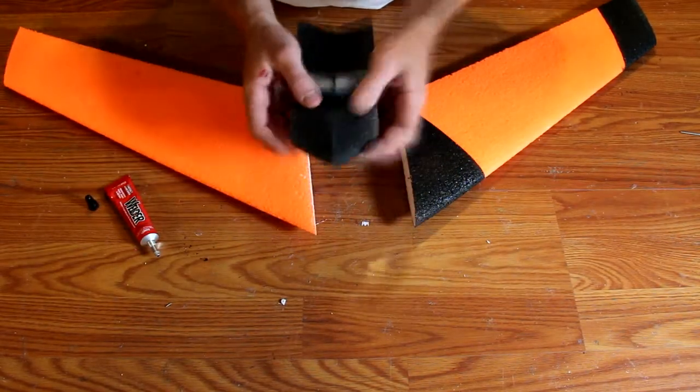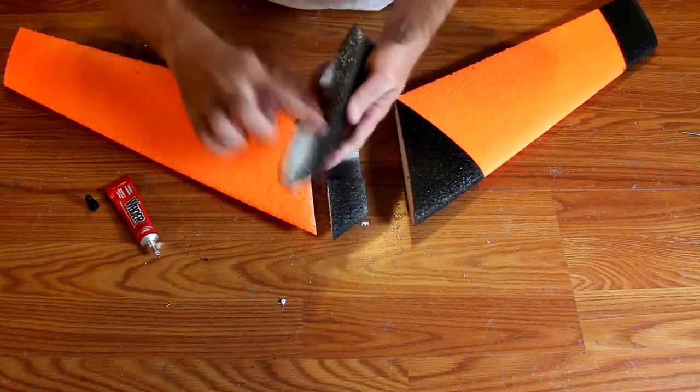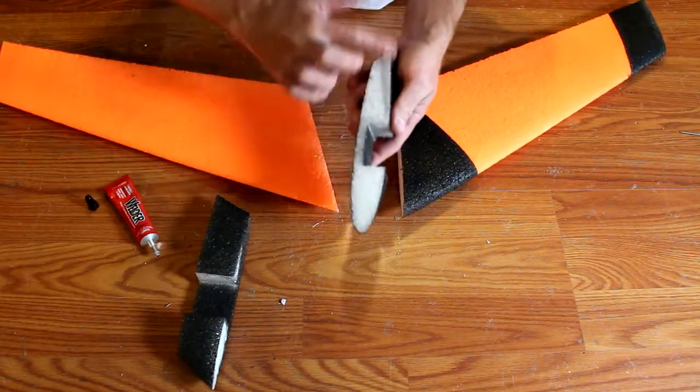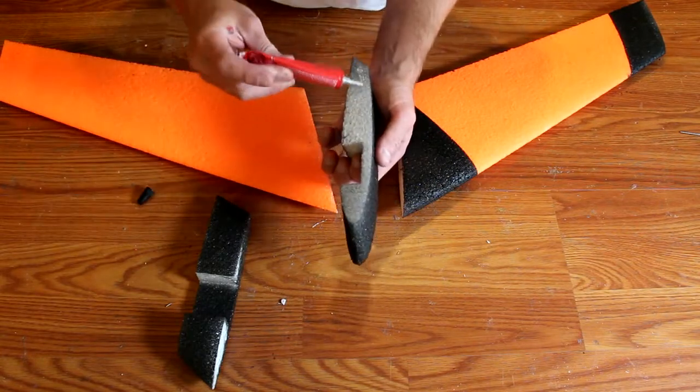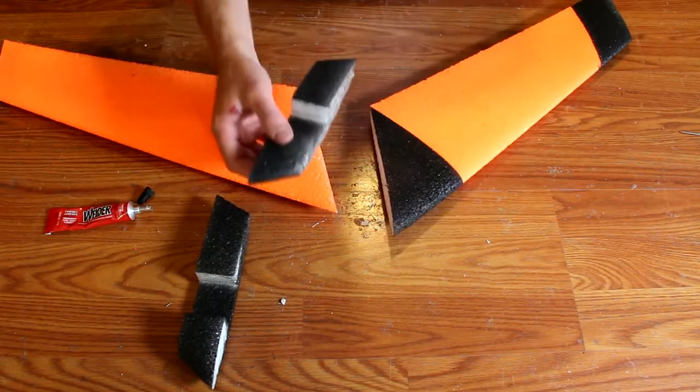Start off this build by applying glue to the wing pieces. There should be four pieces in total. Apply a healthy amount of glue to all bonding surfaces and then pull them apart, making sure that they're all coated.